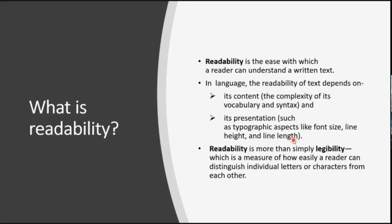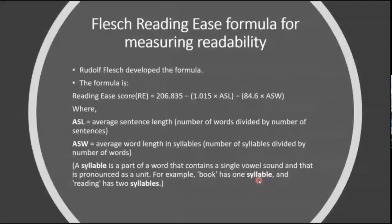We will discuss the most popular formula: the Flesch Reading Ease formula for measuring readability. It was developed by Rudolf Flesch based on his PhD thesis. The formula uses ASL — average sentence length — and average syllables per word. A syllable is a part of a word that contains a single vowel sound. When there are fewer syllables, the text is easier to understand. If the number of syllables per word increases, readability decreases.